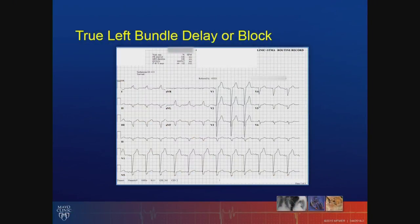So Dr. Molperu, since it's such an important thing to be sure about, how do you recognize a true left bundle branch block on EKG? EKG is one of the greatest tools that we have today to recognize left bundle branch block. The QRS becomes wider when you have electrical dyssynchrony. And as the left ventricle is posterior, in lead V1 you have a negative QRS complex. There are certain criteria that are described to recognize true electrical left bundle branch block.